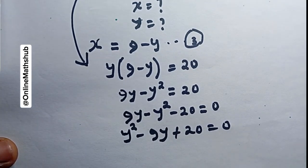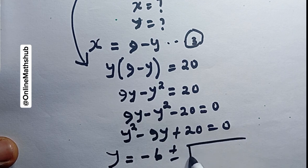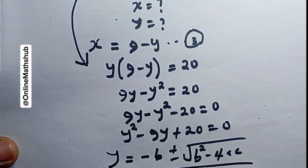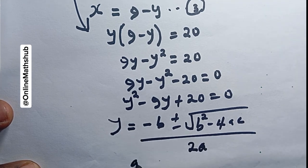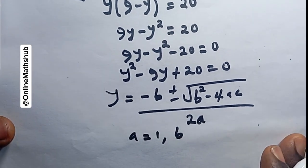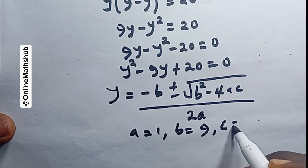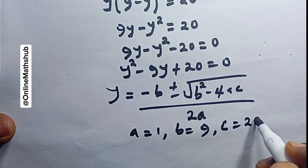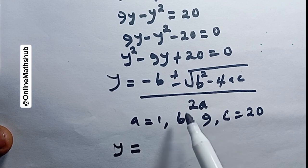I'm going to use the quadratic formula to solve: y equals negative b plus or minus the square root of b squared minus 4ac, all divided by 2a. In this equation, a is the coefficient of y squared which equals 1, b is the coefficient of y which equals negative 9, and c is the constant which equals 20.